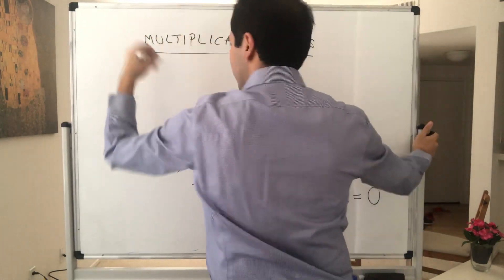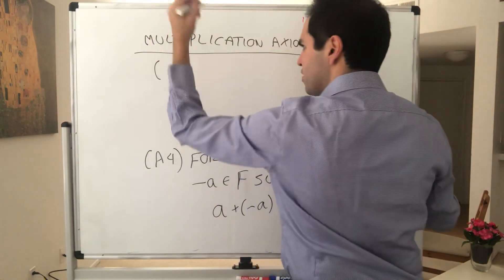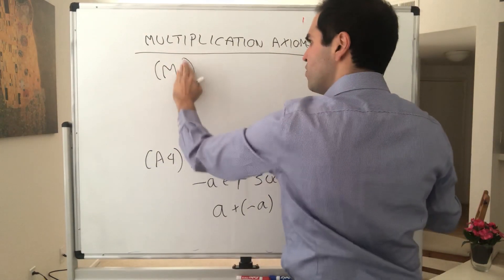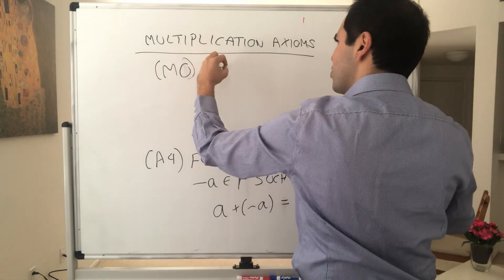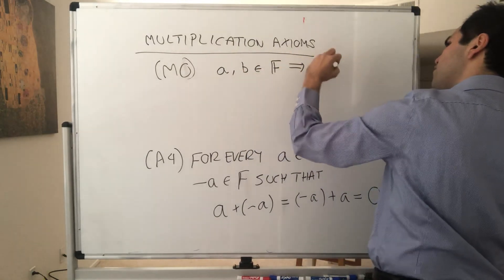So first of all, again, a, b, and c are in the field. And just like before, first of all, fields are closed under multiplication. So in other words, a, b in F implies your product is still in F.